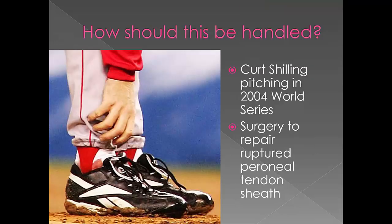How should a situation like this be handled? This is a picture of Curt Schilling pitching in the 2004 World Series. He had surgery to repair a ruptured perineal tendon sheath several days before this picture was taken. He was actively bleeding on the mound and kept touching his actively bleeding ankle before throwing the ball. What's the potential contamination? Kind of makes you think.